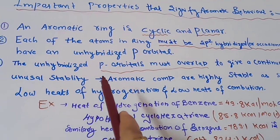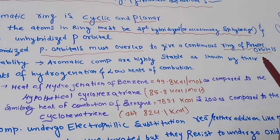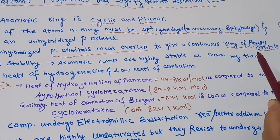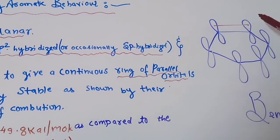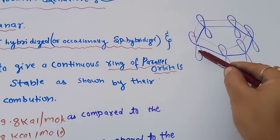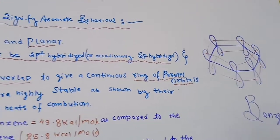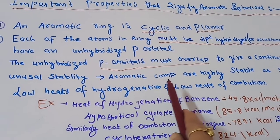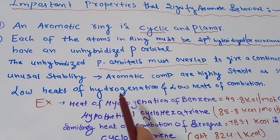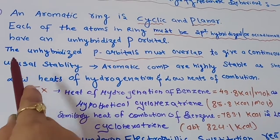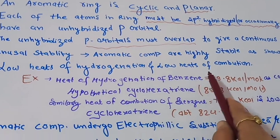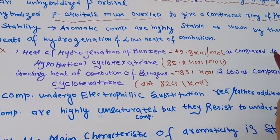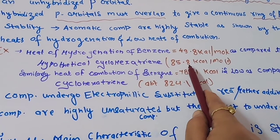Third, the unhybridized p orbitals must overlap to give a continuous ring of parallel orbitals. All the unhybridized p orbitals overlap each other sideways to form a continuous network. Next, aromatic compounds must have unusual stability — they are highly stable as shown by their low heats of hydrogenation and low heats of combustion.